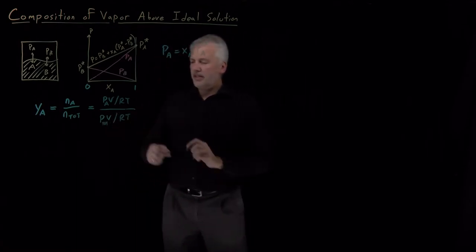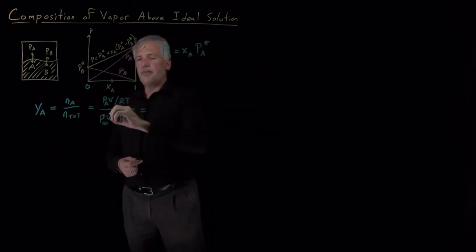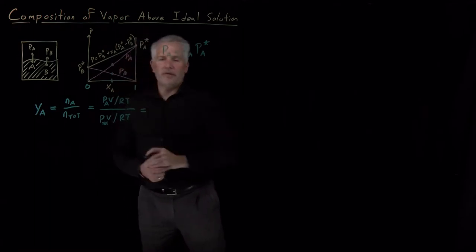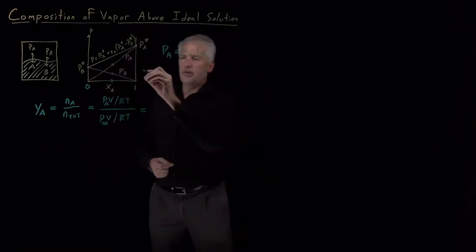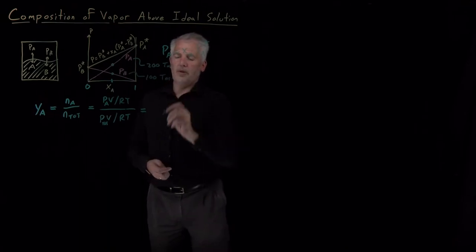In this case, if we think back to the case where we have a 50-50 mixture that had 100 torr of B and 200 torr of A, just as an example.